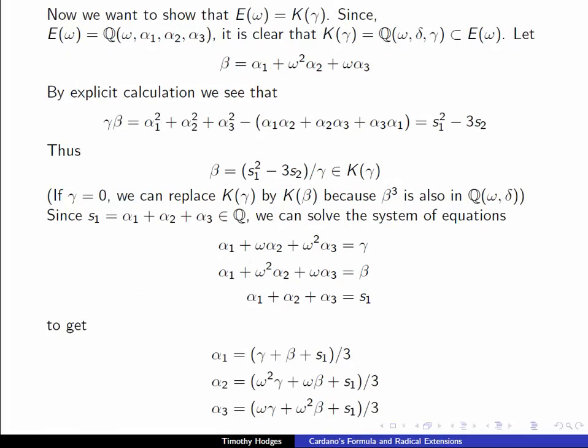Now we want to show that E(ω) is equal to K(γ). So to do this, we need to show that all of the roots are in K(γ). Let's define β to be the slightly different combination of the roots and ω: α₁ + ω²α₂ + ωα₃. If we multiply γ and β together and again do one of these calculations, we get s₁² - 3s₂.